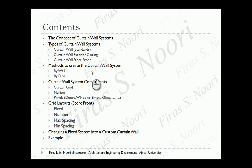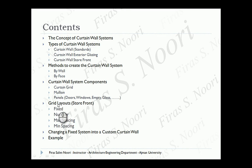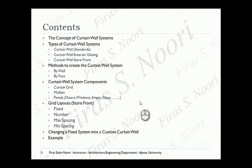We've now covered a lot about the curtain wall system: the three types, creation by wall or by face, the three components - curtain grid, mullion, and panel - and the four grid layout types for storefront. We also saw how to change a fixed system into a custom curtain wall. I'll stop this video here around 40-45 minutes, and I'll upload an example soon using the house we've been working on this semester. Thank you very much.